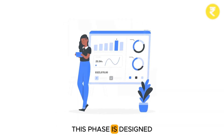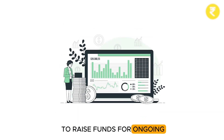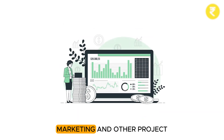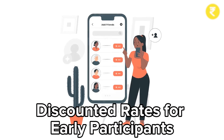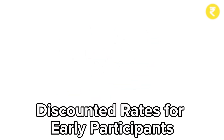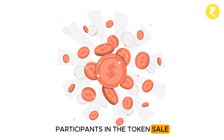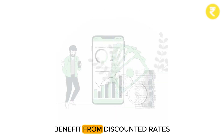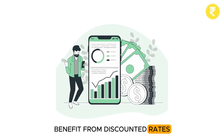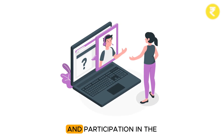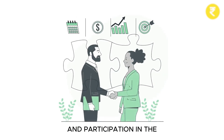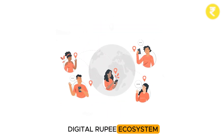40% of the total supply is available for purchase during the token sale. This phase is designed to raise funds for ongoing development, marketing, and other project-related expenses. Early participants in the token sale benefit from discounted rates, providing an incentive for early support and participation in the Digital Rupee ecosystem.